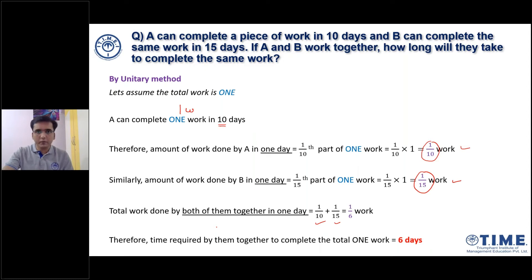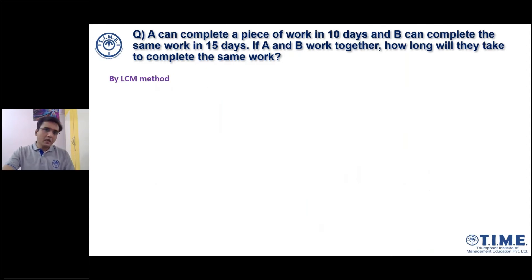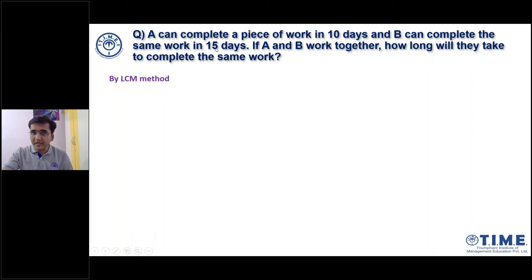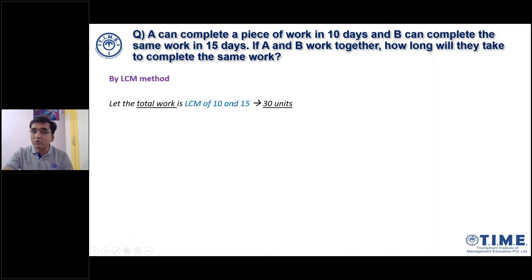Now let's solve the same question using the LCM method. In the unitary method we considered total work as one, but in the LCM method, total work is not taken as one. Instead, a random number is considered as total work. That number comes from the LCM of the given numbers in the question. Here I see 10 and 15, so I'll take the LCM of 10 and 15, which is 30. So let's assume 30 chocolates or 30 units is the total work.